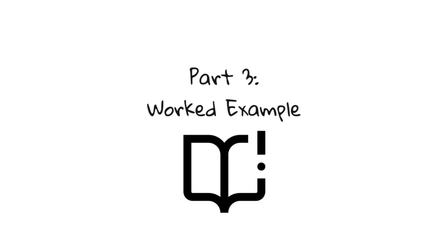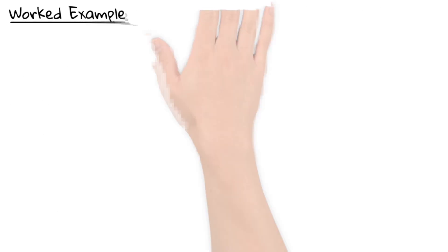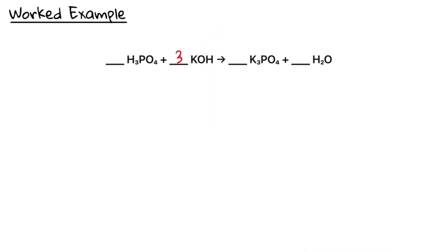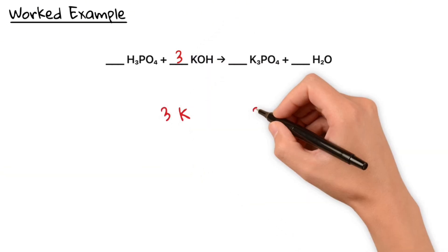Now let's go to our main example. This is a reaction between phosphoric acid and potassium hydroxide. Let's balance it step by step. Following our tips, we are looking for an element that appears only once on each side. In our example here, that's potassium. On the right, there are three potassium atoms, so we need three potassium hydroxide molecules on the left. Now potassium is balanced.